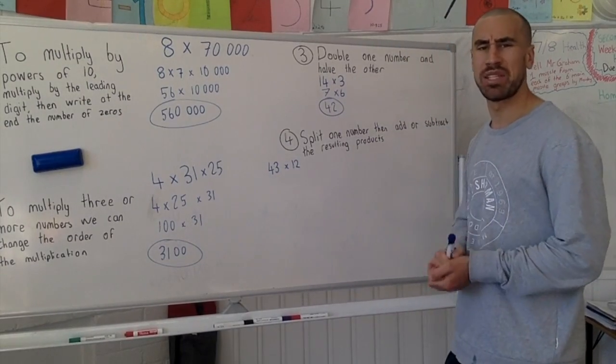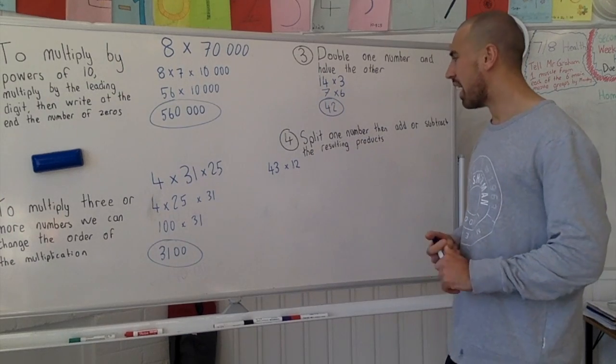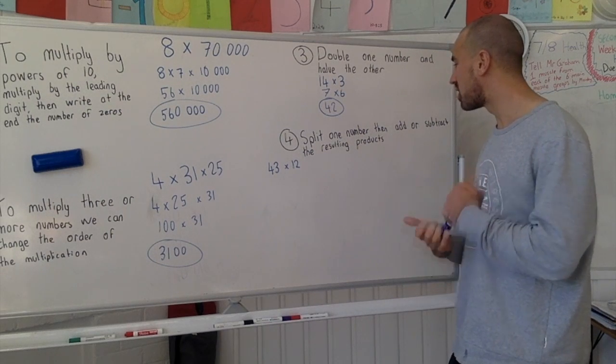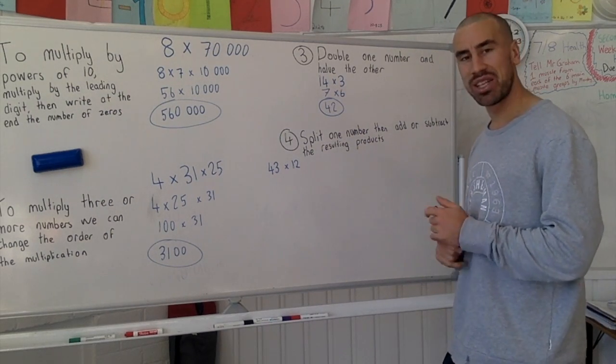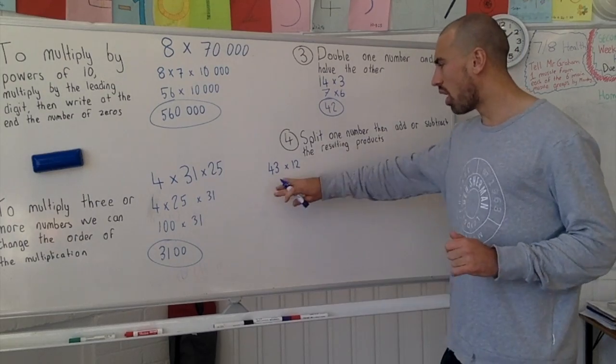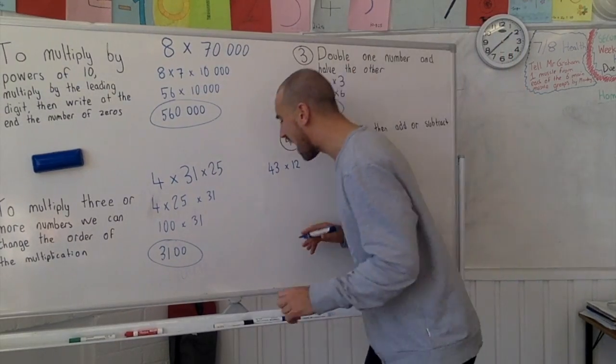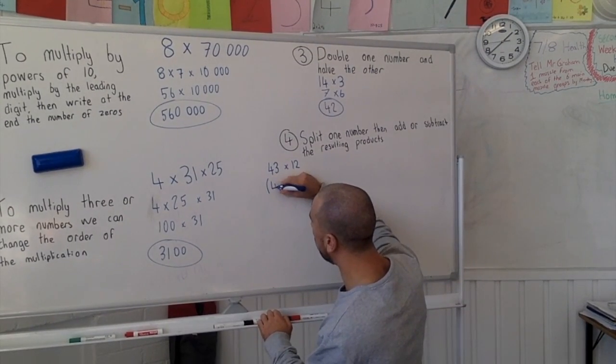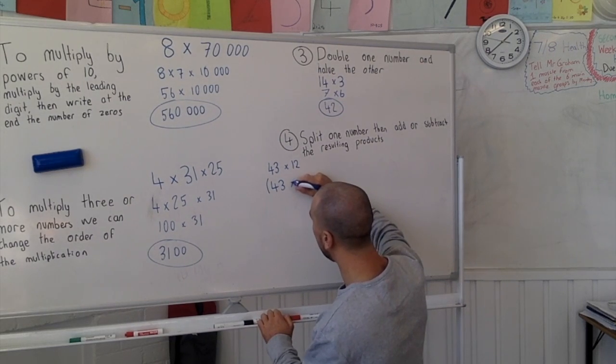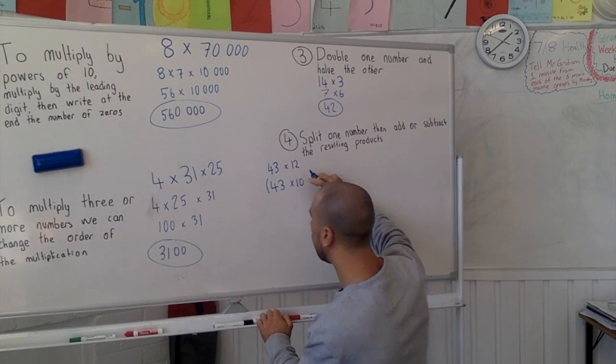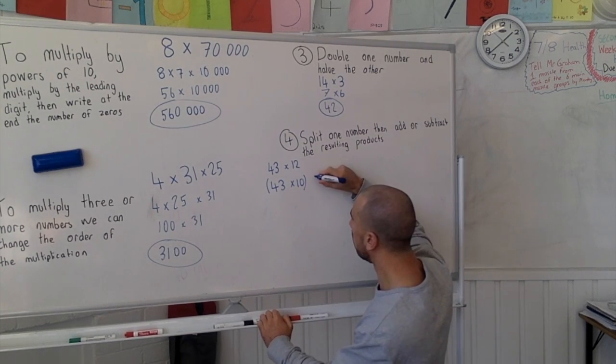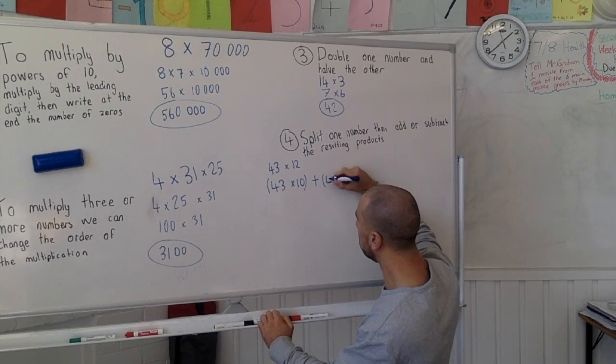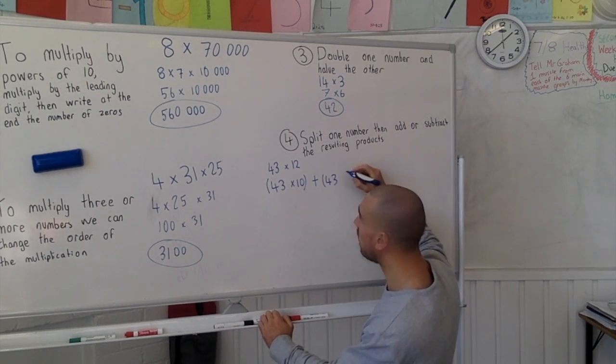Something that's on paper is pretty complicated if we don't have a calculator. However, using our strategy, split one number then add or subtract the resulting products. Alright, 43 times 12 we can rewrite that utilizing brackets here as well. So 43 times 10 plus 43 times 2.